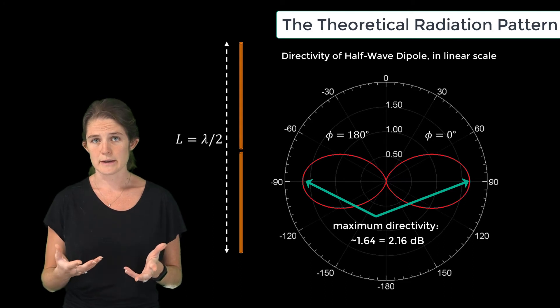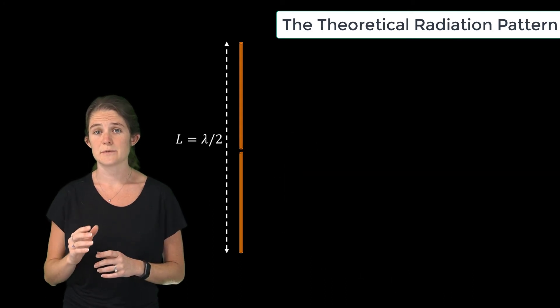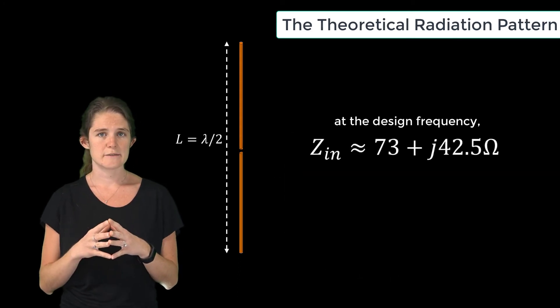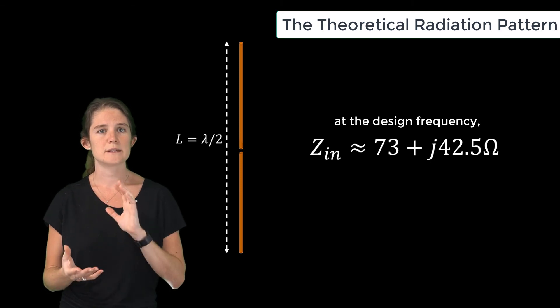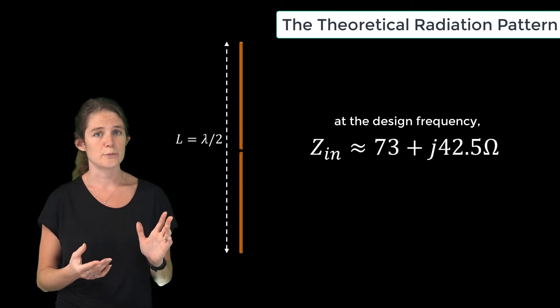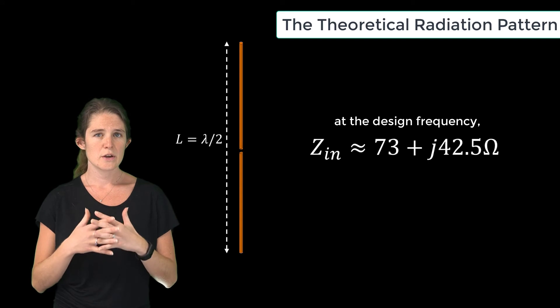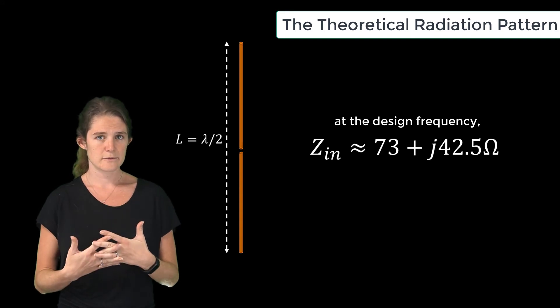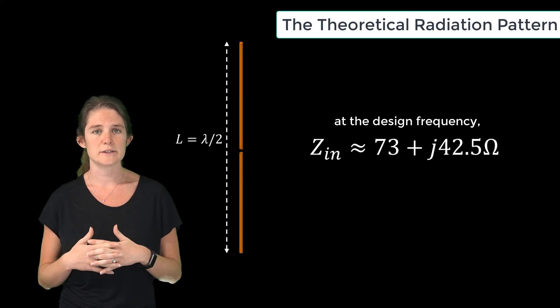Also at this frequency, the input impedance of the antenna will be approximately equal to 73 plus j42.5 ohms. Notice that this is inductive, that's because of the fringing fields of the antenna, as we discussed earlier.